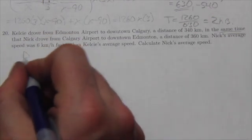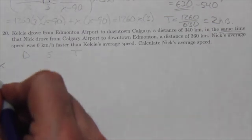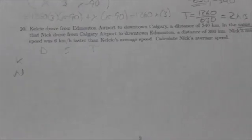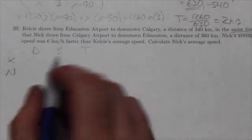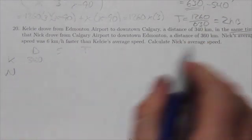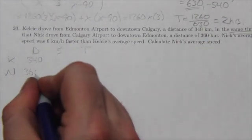Okay, distance, speed, time. So we've got Kelsey, we've got Nick. Okay, a little bit off the page there. Now, Kelsey is going 340 kilometers. Nick is going 360 kilometers.